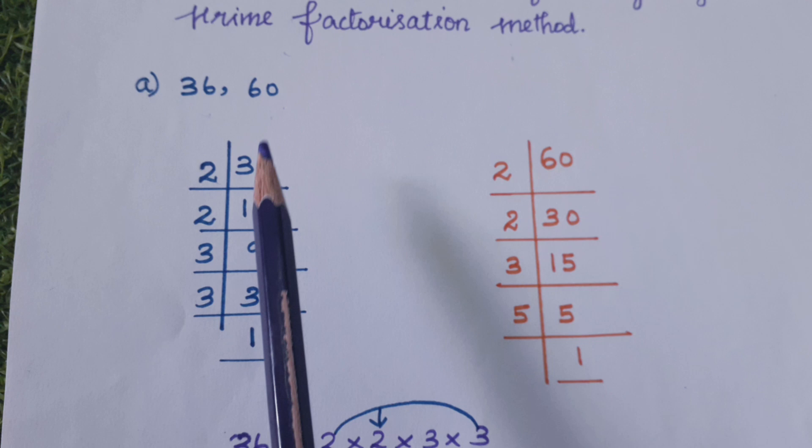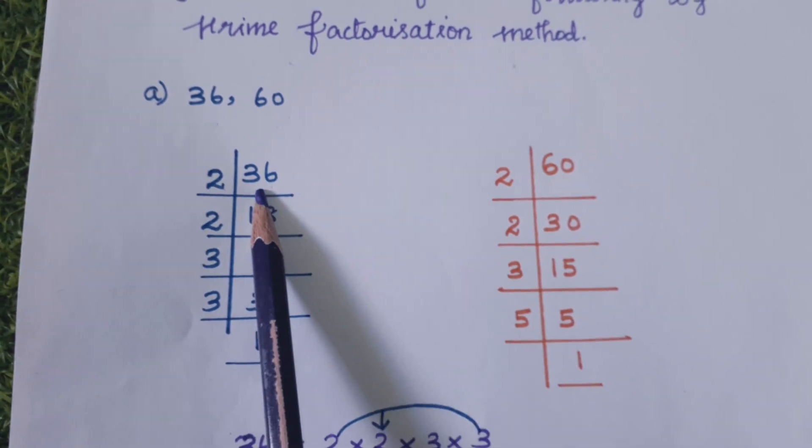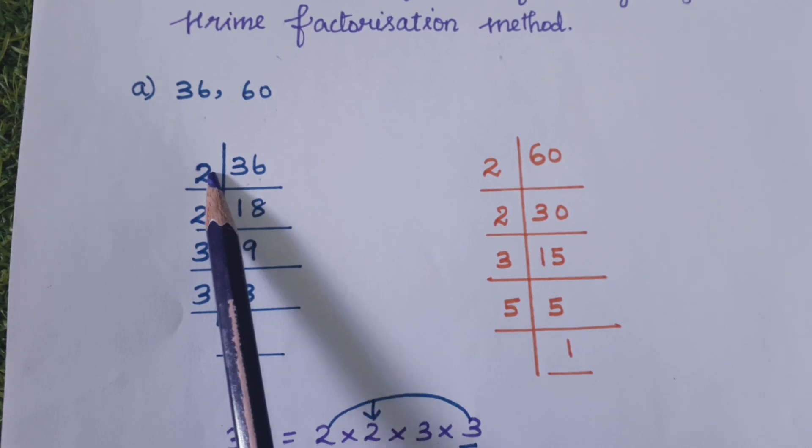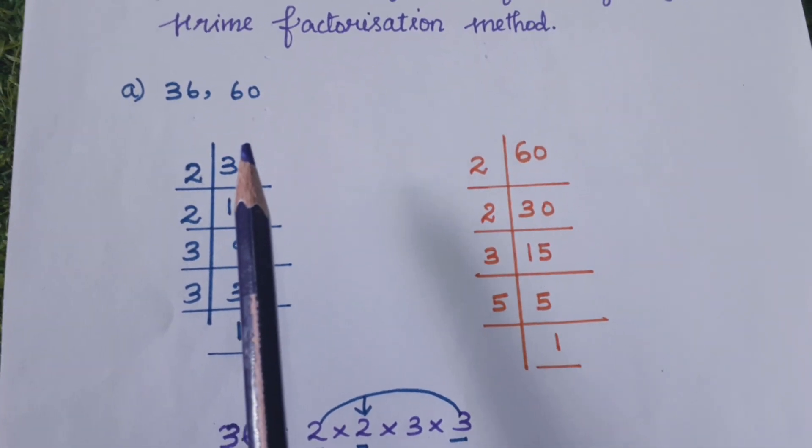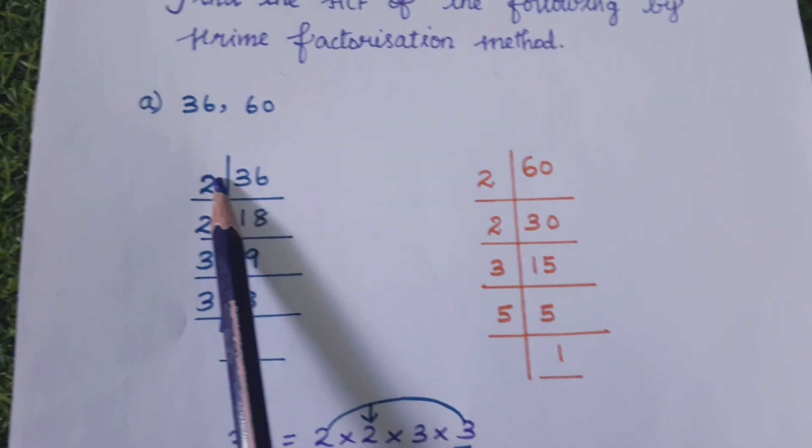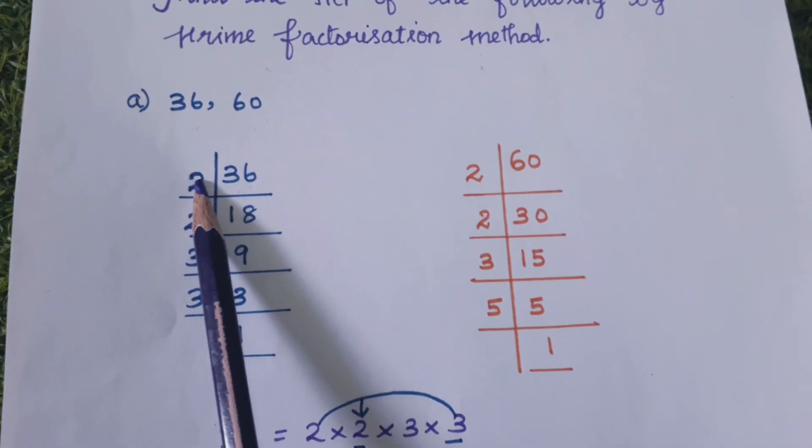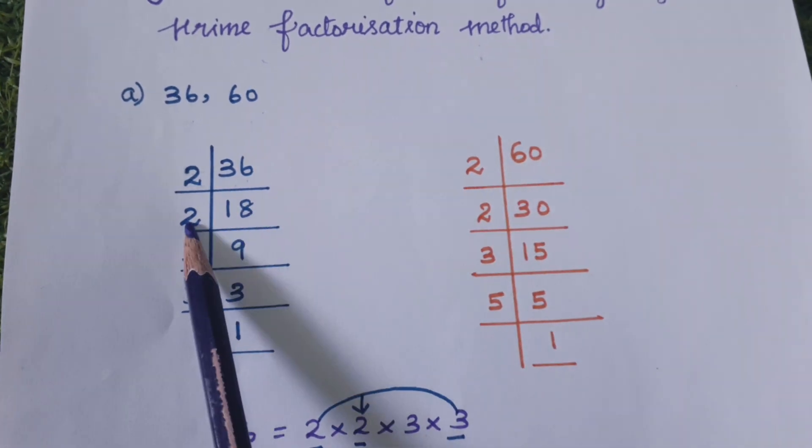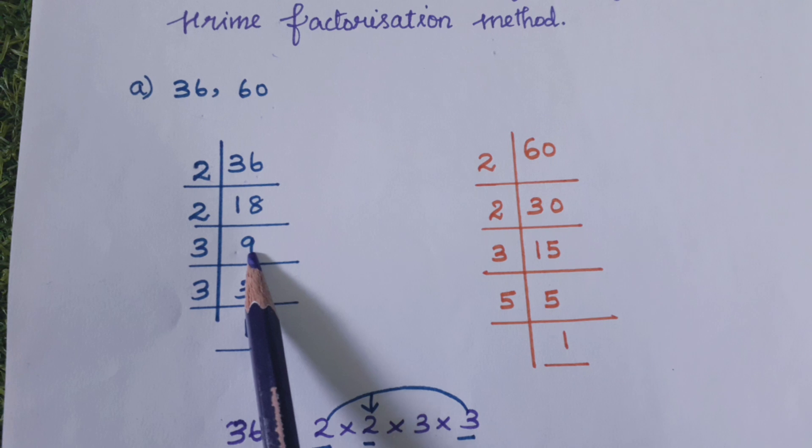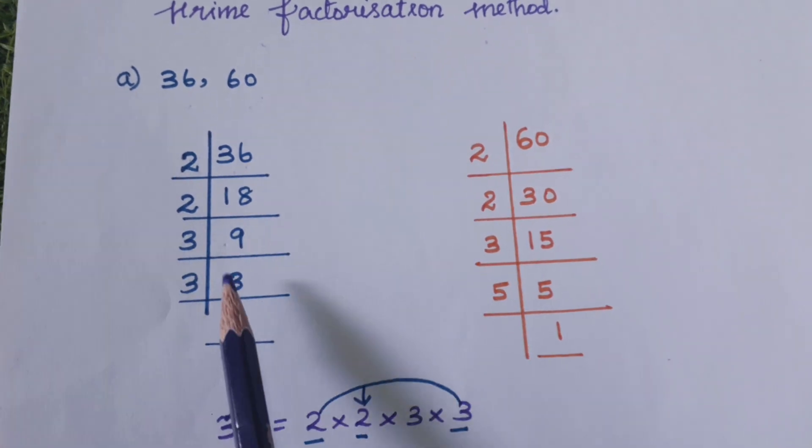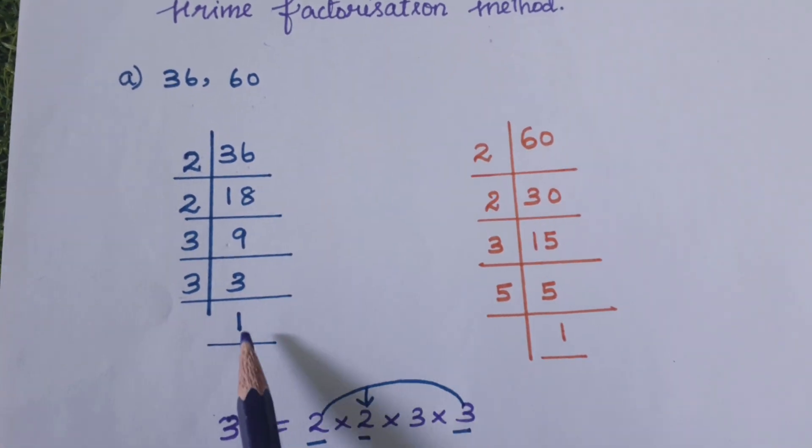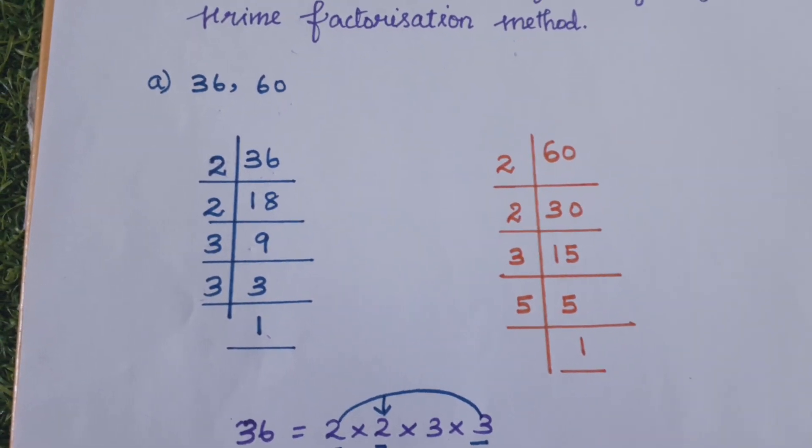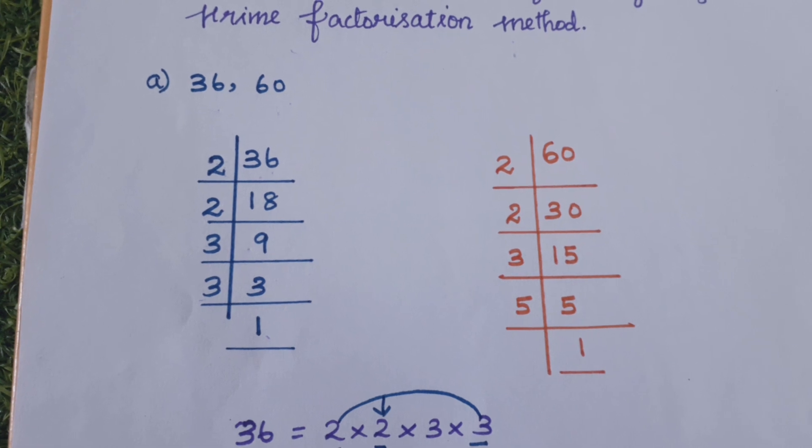First, I'm going to find the factors of 36. I'll divide 36 by 2, because 2 is the smallest prime factor. 2 divided into 36 is 18. 18 divided by 2 is 9. 9 divided by 3 is 3. 3 divided by 3 is 1. When we get to 1, we stop dividing.